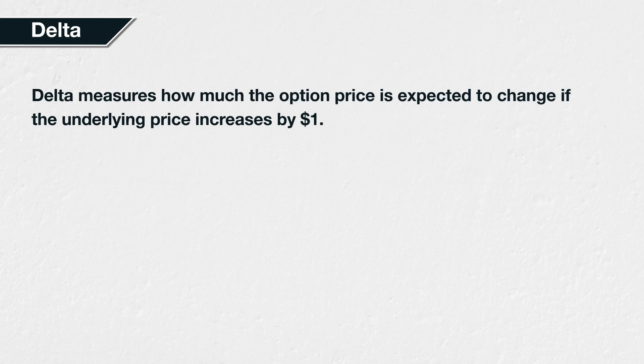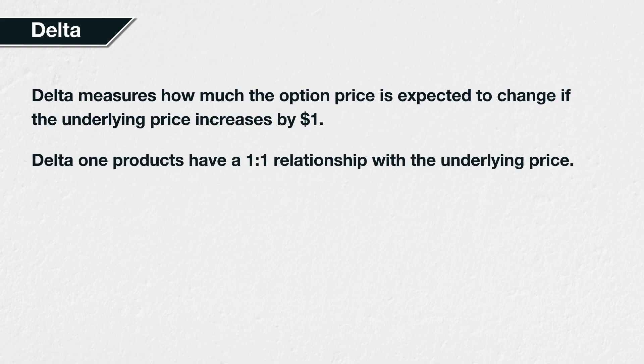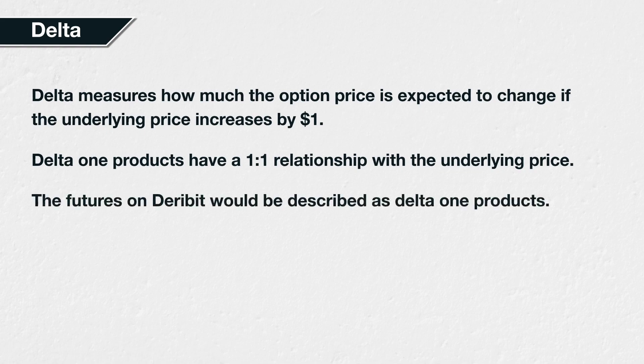Before learning options, most traders will only be familiar with delta-1 products — that is, instruments that have a delta of 1, or negative 1 if they are short. Delta-1 products are any instrument that has a 1-to-1 relationship, or very close to 1-to-1, with the underlying price of the asset. For example, the Bitcoin and Ethereum futures contracts on Deribit would be described as delta-1 products. If the underlying price of Bitcoin increases by $1, so too will the price of all Bitcoin futures contracts. There may be some slight variations and some backwardation or contango in the market, but in general that 1-to-1 relationship will be very close to accurate for those products.